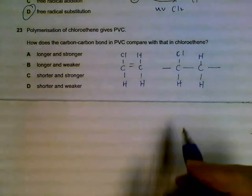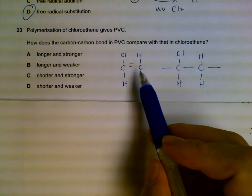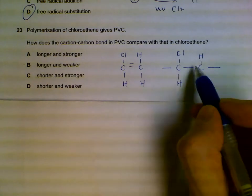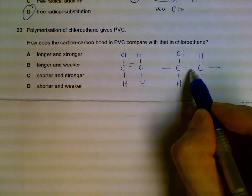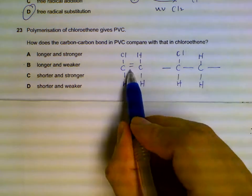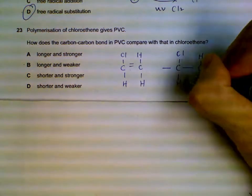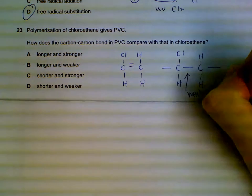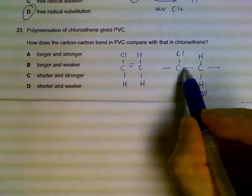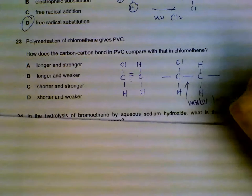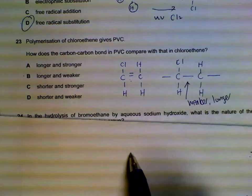Question 23: In polymerization, how does the polymer PVC compare to the monomer? The polymer will have single bonds, the monomer has double bonds. The single bond will be weaker compared to the double bond, and it will also be longer than the double bond.